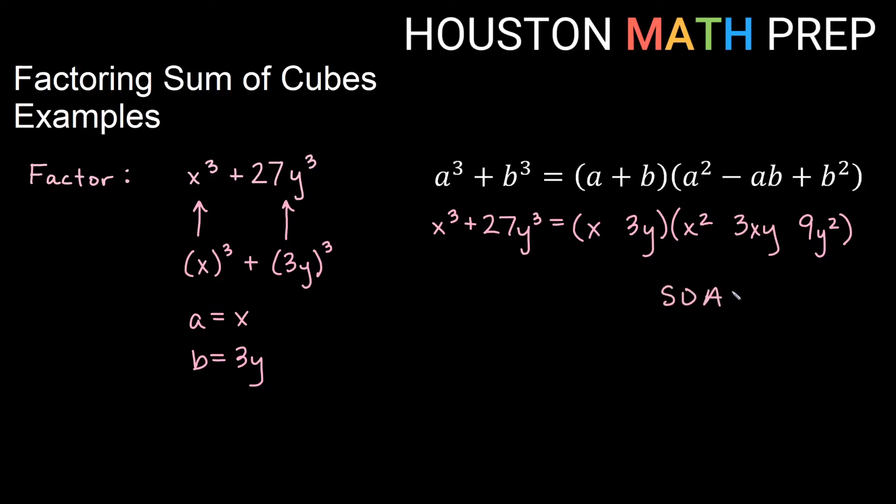Looking at SOAP, since I'm starting with plus, same will be plus, opposite will be minus, and always plus gives us plus in the back each time. So that's our answer there. x + 3y times x² - 3xy + 9y². Let's do one more example.